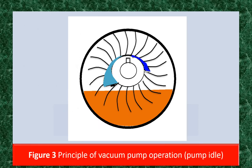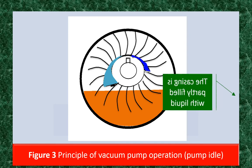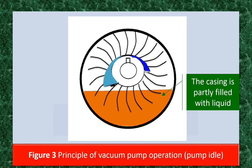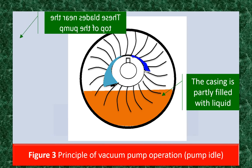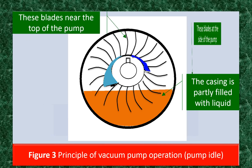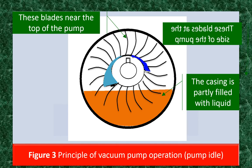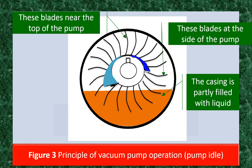In the figure shown, the pump is in idle condition — that is, it is not working. The pump is partly filled with sealing liquid shown in brown color. Sealing liquid fills the casing roughly 50% and remains at the bottom. The blades near the top of the pump are closer to the outside wall than at the side of the pump. The bottom ends of the impeller blades are immersed in the sealing liquid.